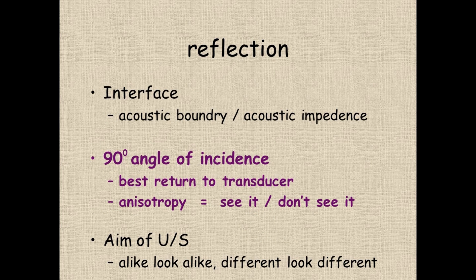Good reflection is very important to produce good quality ultrasound images. In order to reflect sound back towards the transducer, there needs to be some form of acoustic boundary — a difference in tissues — which causes an interface allowing reflections to occur. It's important that the ultrasound beam cuts through the structures to be interrogated as close to 90 degrees as possible, to give the best return and avoid anisotropy. The aim of ultrasound is to make tissues that are alike look alike, and tissues that are different look different.